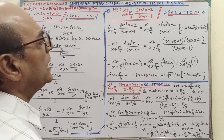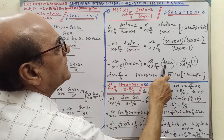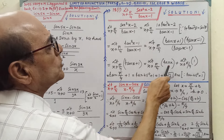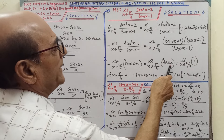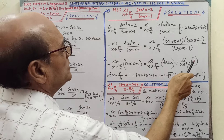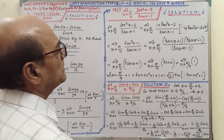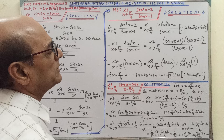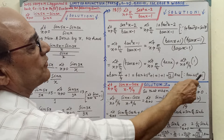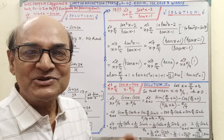Now we will put the value of the limit. After splitting, that is tan x minus 1, in place of x we have to put the value pi by 4, and the limit of the constant number remains the same. So tan 45°, that means tan 45° — the value of tan 45° is 1. So 1 plus 1 equals 2; this is the answer. Since tan 45° equals 1, you may write that step or may not, but your answer is 2.